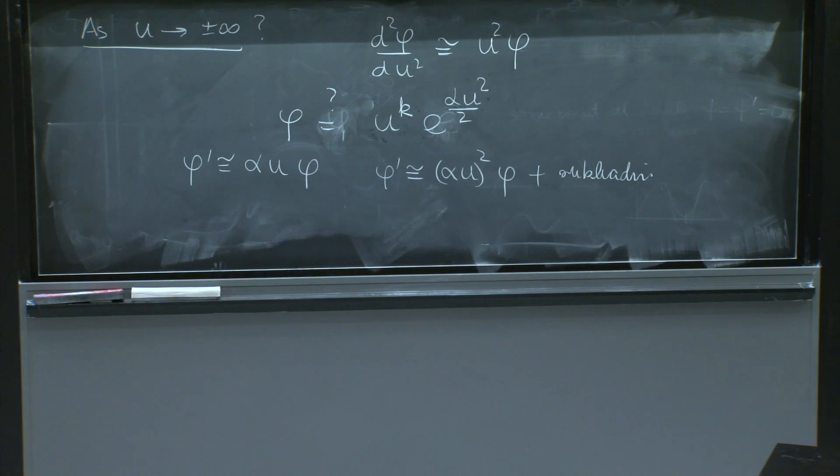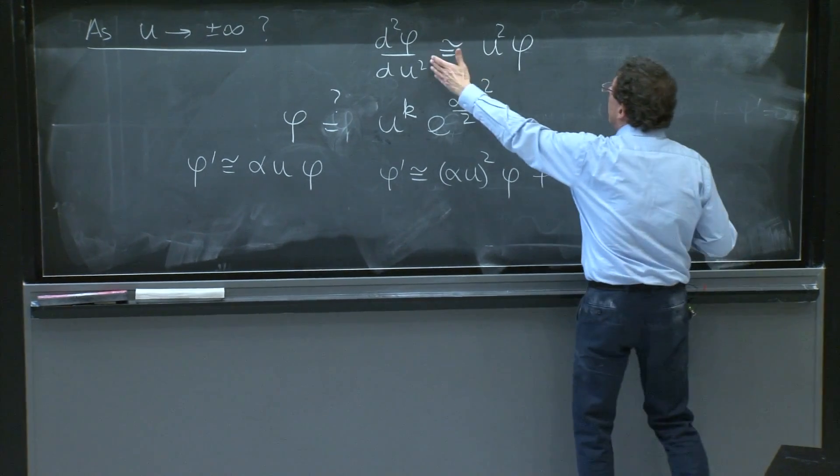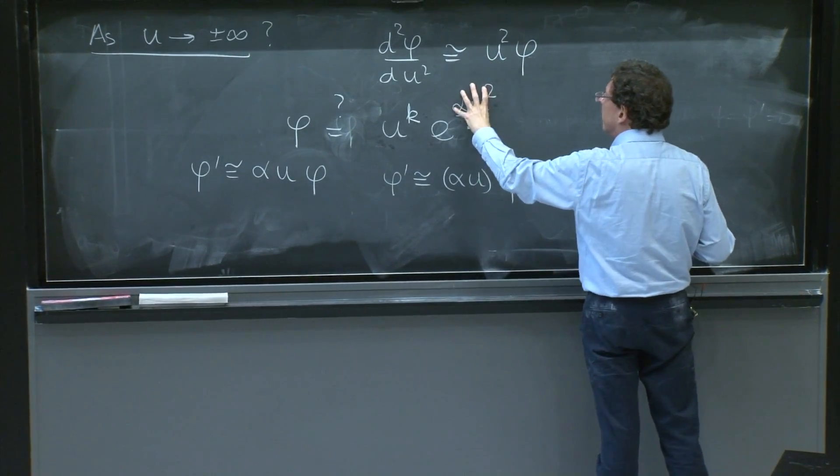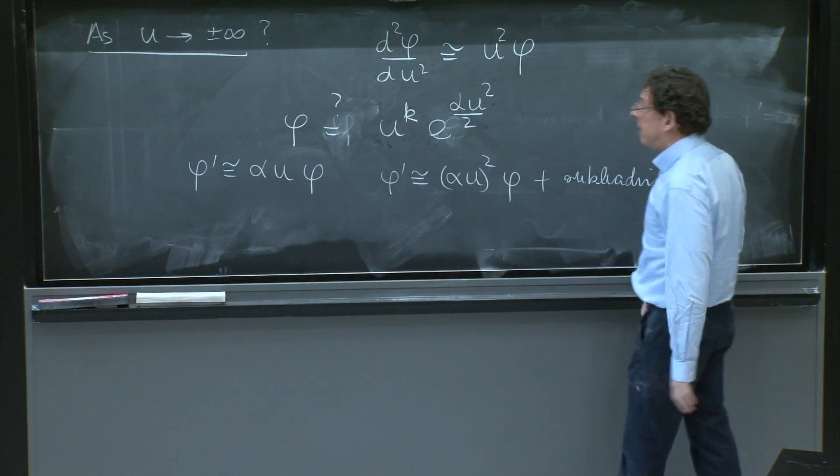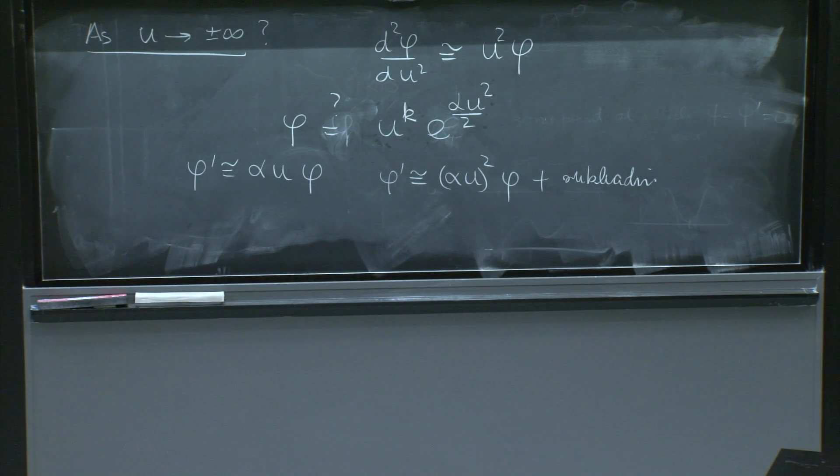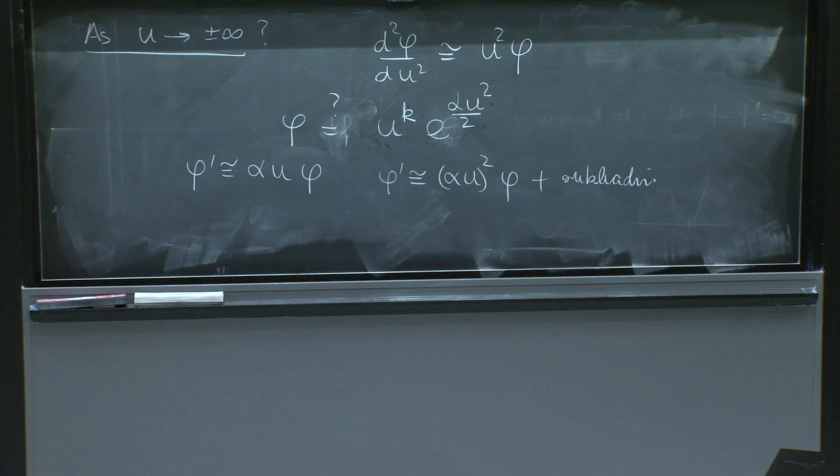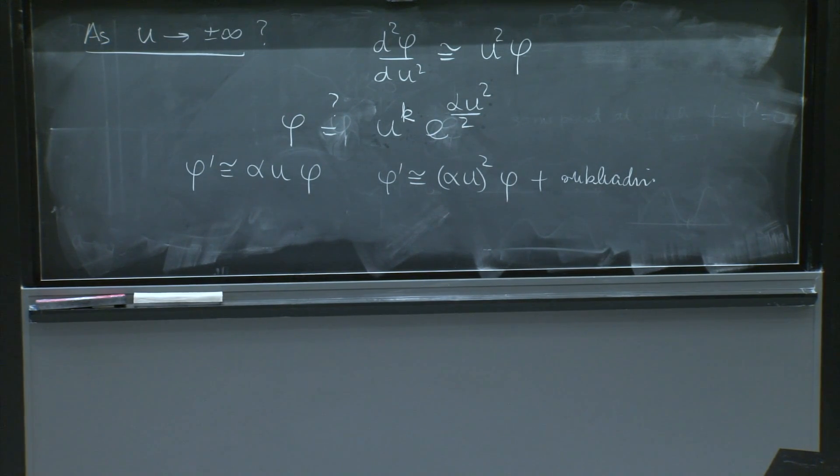When you differentiate a function, and you're wanting to solve the most divergent thing, because we're looking at the most divergent part, you will always differentiate this. And this u to the k is really a spectator. It doesn't do anything. Because when you differentiate that, you get something much smaller. That doesn't matter.